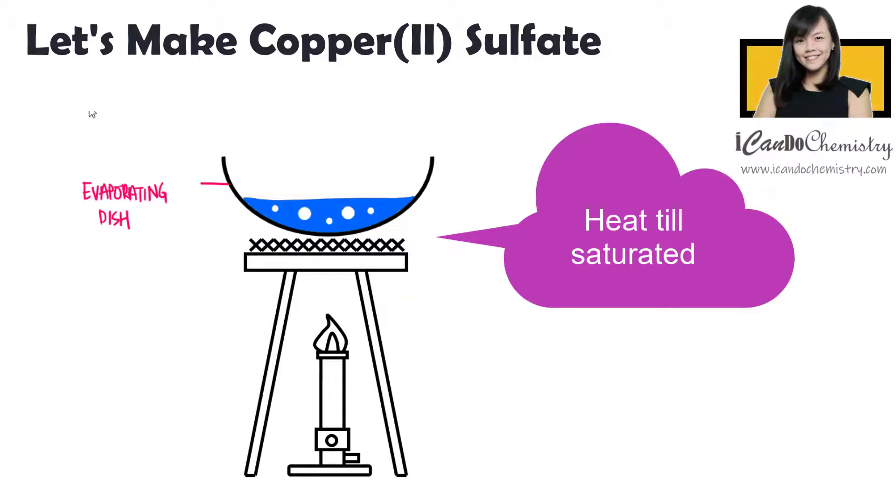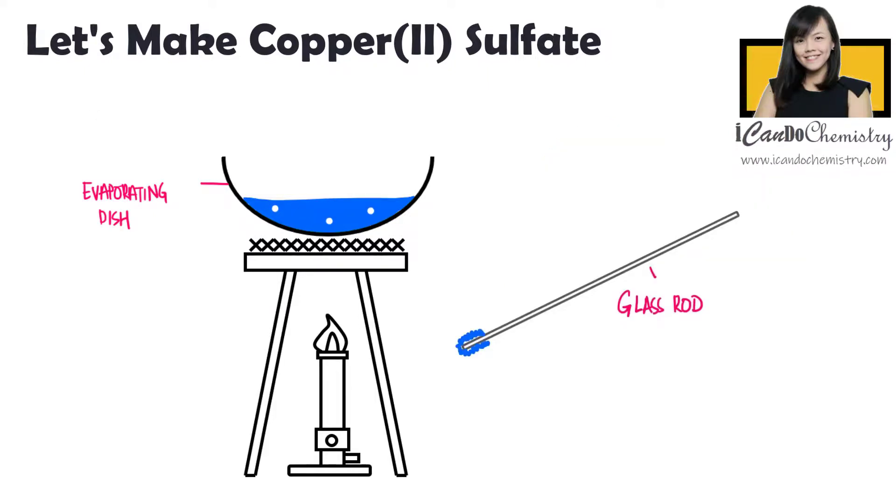To test whether a solution is saturated, we would dip a clean glass rod in the solution. As the solution cools, saturated solution should leave small crystals on the rod. If not, we will need to continue heating until it is saturated.